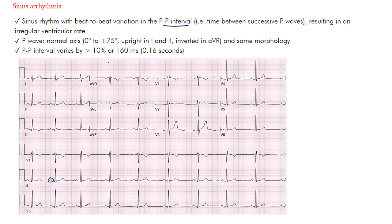Remember, the P-to-P interval goes from one P wave to the next. Similarly, the R-to-R interval goes from one R wave to the next. Here we're talking about the P-to-P interval specifically, and we're saying there's beat-to-beat variation in it — meaning the duration from one P-to-P interval is different from the one that follows.